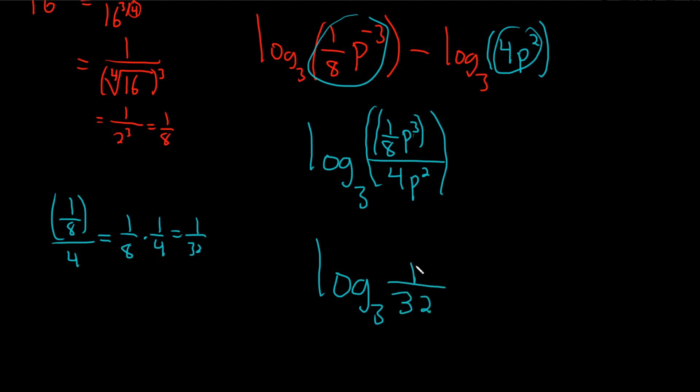And then, P cubed over P is just P because you lose one of the P's. Oh, I messed up. This is a negative. This is a negative. I caught it. The negative 3 here. I lost my negative.